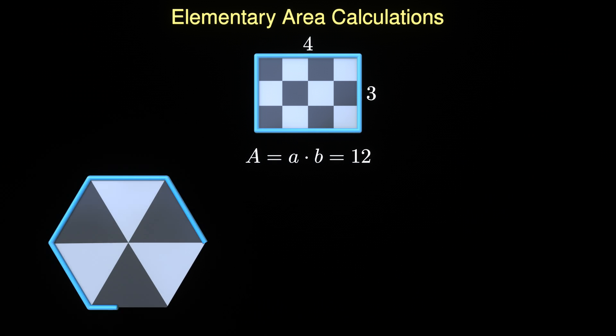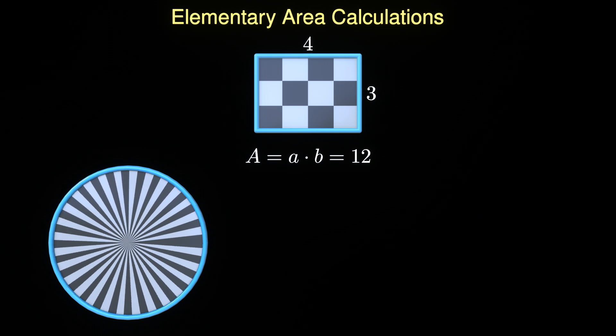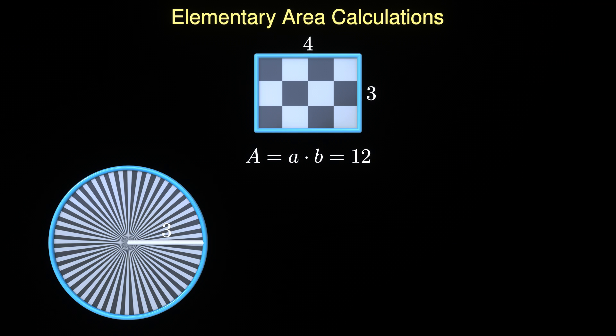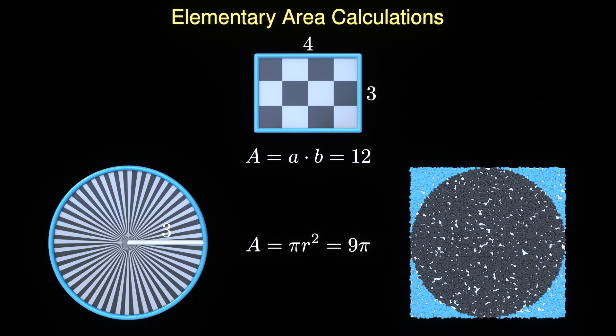In the course of their education, students are exposed to more and more sophisticated tools. The first non-trivial area that students come across is the area of a circle, where for the first time the transcendental number pi appears.